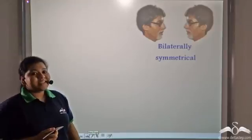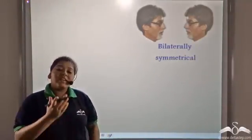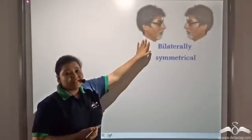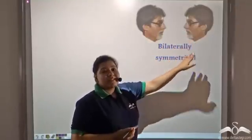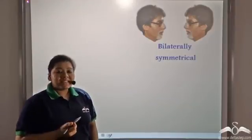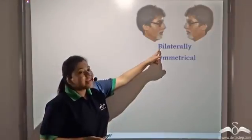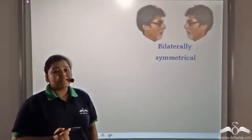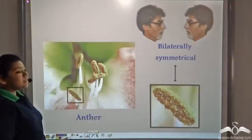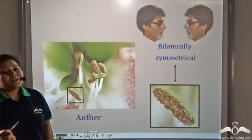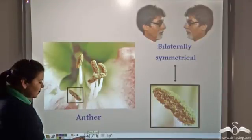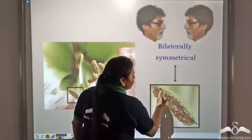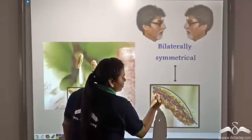Now, can you recognize this famous Bollywood actor by just looking at one side of his face? Yes, it is the famous Mr. Amitabh Bachchan. Now look at the other side of his face — it is completely the same. This is because a human head is bilaterally symmetrical, which means it is symmetrical or similar on both sides. Similarly, the head of a stamen, which is known as an anther, is also bilaterally symmetrical — it has two equal halves. If you cut an anther midway, this portion is similar to this portion.